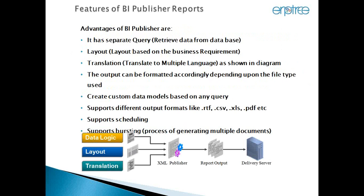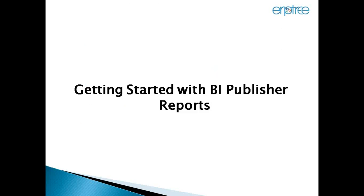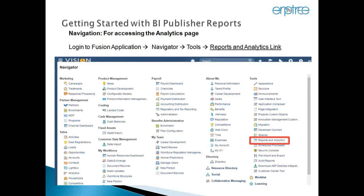In Fusion we have OTBI and BI Publisher. The advantage of BI Publisher is that we can write our SQL based on Fusion application base tables and then attach a template to the report and get the output in different formats, which is not possible in OTBI. I will explain the differences between these two. Also, with BI Publisher we can do bursting, where we can send the report output to different users based on certain conditions.